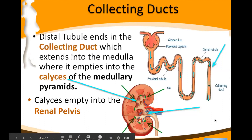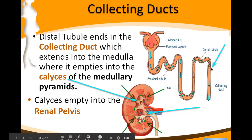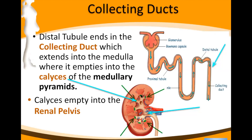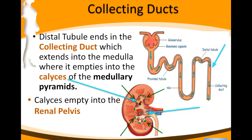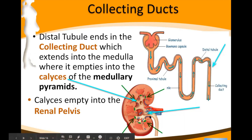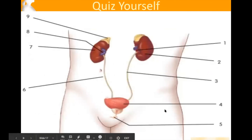After filtration, reabsorption, and secretion, the fluid is no longer called filtrate — it's now urine. It flows through the collecting duct, runs through the medullary pyramids into the calyces. Minor calyces connect to each pyramid, and then three minor calyces come together into a major calyx. All the urine gathers in the renal pelvis, which acts like a funnel, directing everything into the ureter and then to the bladder.